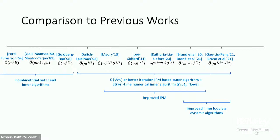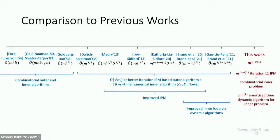Here's how our work fits in. We achieved the first almost linear time algorithm. We work in the interior point framework, but with an outer algorithm that takes almost linear number of iterations — much more than previous works' sqrt(m). The win is that we achieve a more combinatorial inner problem and give a dynamic data structure to solve the sequence of inner problems in almost constant time per problem.